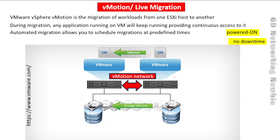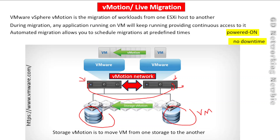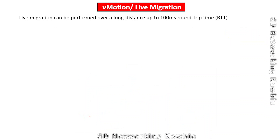The source host and the target or destination host need to have a connection between them. There is also storage vMotion, which is relevant here: storage vMotion is used to move virtual machines from one storage to another. So virtual machines stored on one storage can be migrated to a different storage location.